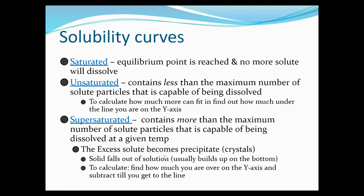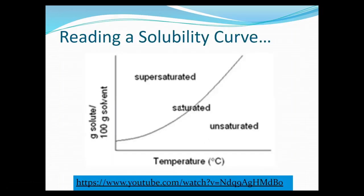With a supersaturated solution, generally it looks like it dissolves, but as it sits, you're going to see it falling out of solution and building up on the bottom of the beaker. On the curve, if a point falls on the line, it's saturated. If you're above the line, it's supersaturated — above the maximum amount. If you're below the line, you're at an unsaturated point — you don't have the maximum amount that can dissolve.